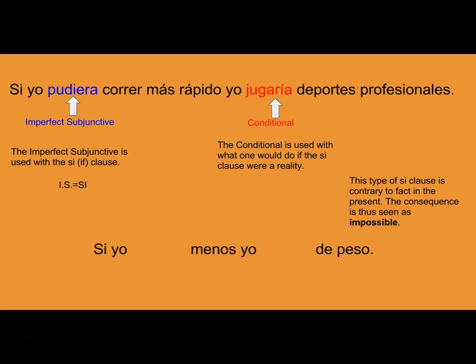So if we look at this example: if I ate less, I would lose weight. The if part — if I ate less — is going to be in the imperfect subjunctive: si yo comiera menos. And what you would do is in the conditional: yo bajaría de peso.